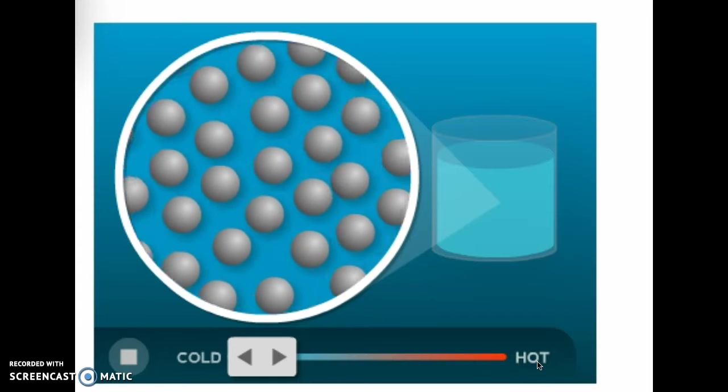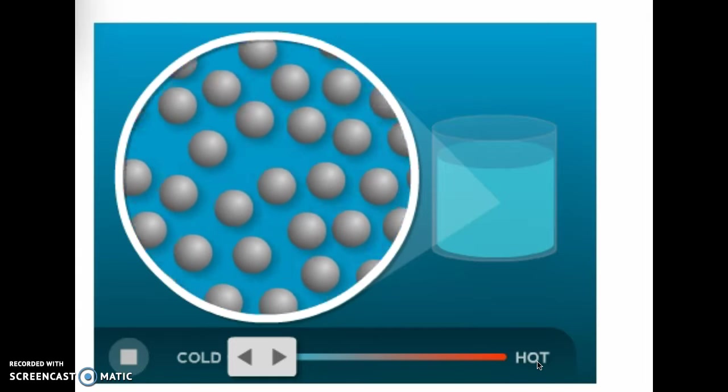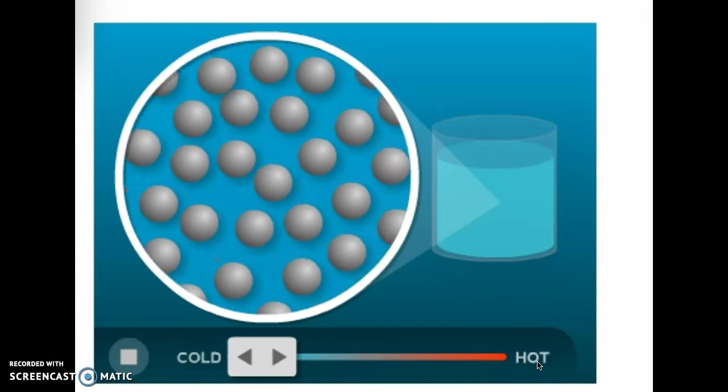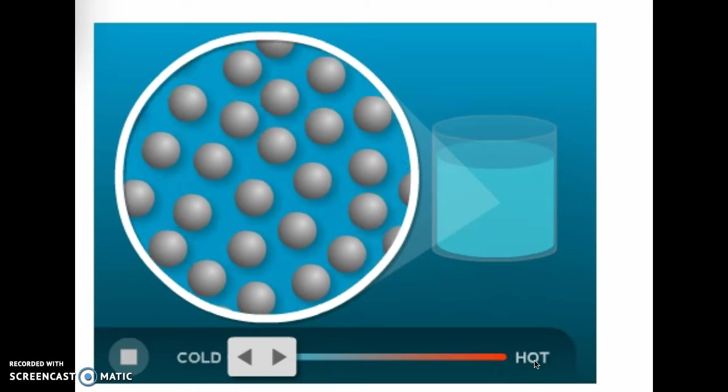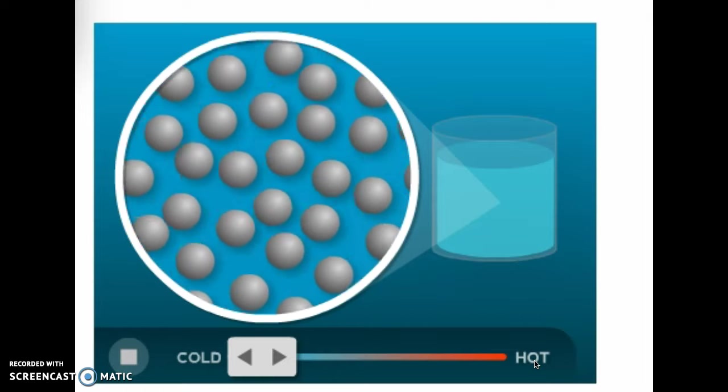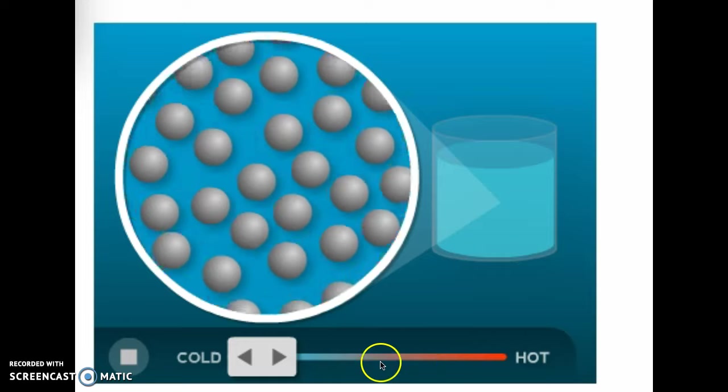So here at the cold liquid we can see that the particles are pretty close together, they're in motion, they're moving and sliding past one another, but they're not moving as quickly as a gas and they're also not in a fixed shape like a solid would be.